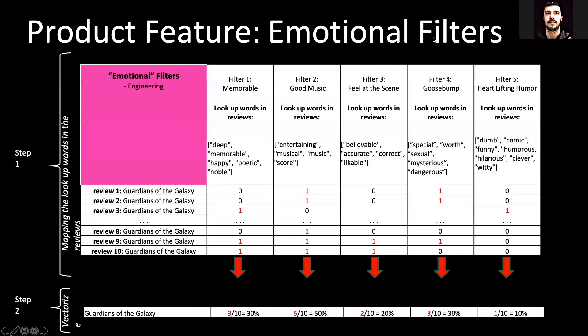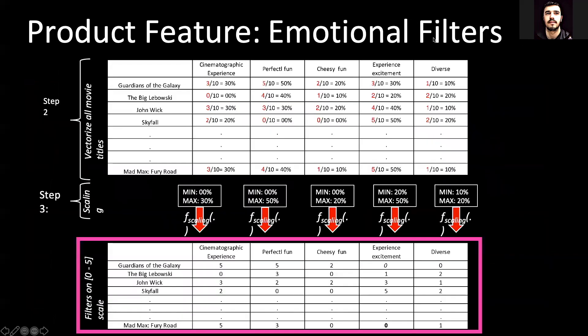We focus on adjectives in the reviews and associate a level of emotion to each movie. After clustering the adjectives in the LDA model, we computed their relative frequencies in the reviews. In the end, we normalized the frequencies on a scale from 0 to 5.